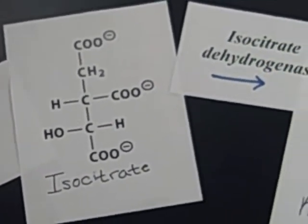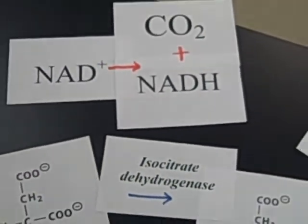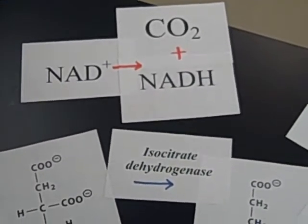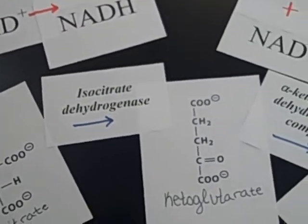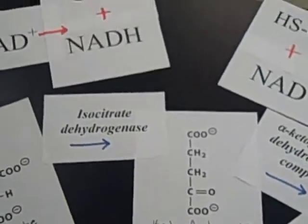To move forward, the enzyme isocitrate dehydrogenase takes the isocitrate, changes it to α-ketoglutarate, and produces one NADH and one CO2.